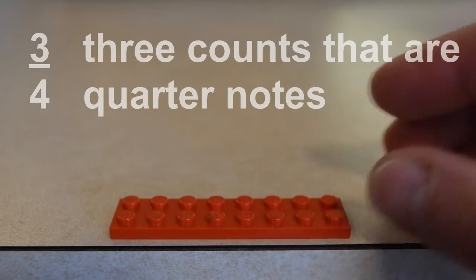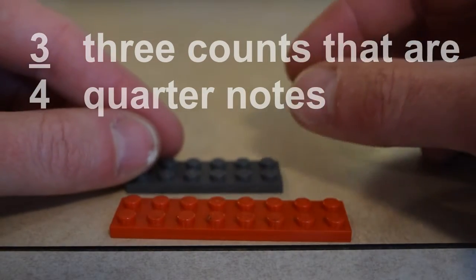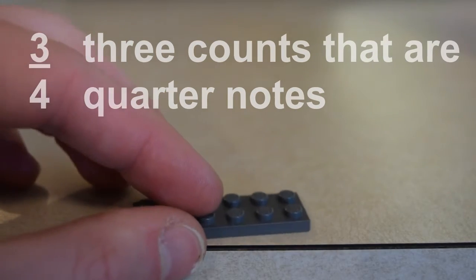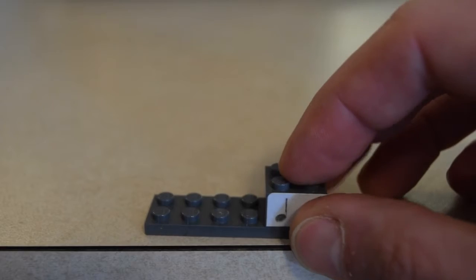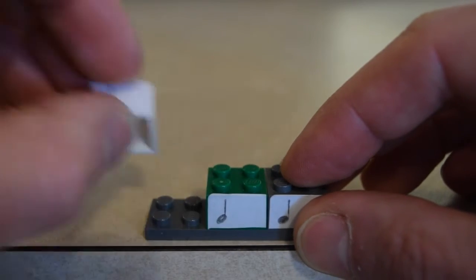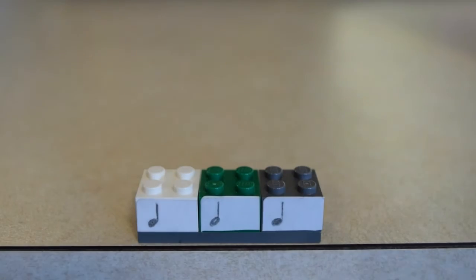So we can't use this red piece anymore as our measure. We need to use something that's one count shorter, so I'm going to use this gray brick. Just to prove that it's the correct length, I'm going to plop in three quarter notes to make sure that it fits properly, and it does.